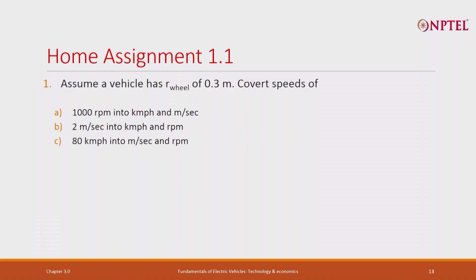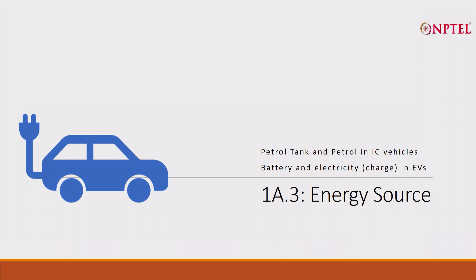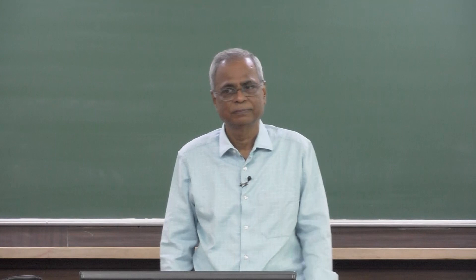There is a home assignment: assume a vehicle has a wheel radius of 0.3 meters. Convert the vehicle speed at 1000 RPM into kilometers per hour and meters per second. Also, given a speed of 2 meters per second, convert it into kilometers per hour and RPM. This is the end of the first section of chapter 1 — introduction and the second section. Any questions?